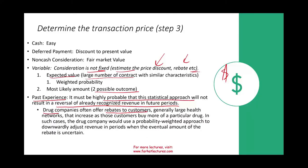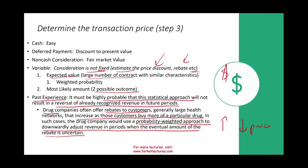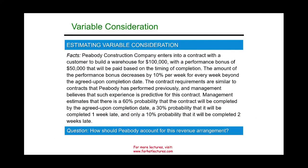Some industries like pharmaceuticals offer rebates to large health networks. The rebate increases as customers buy more of a particular drug — the more you buy, the lower the price in the future. So the drug company must use a probability-weighted approach to adjust revenue downward in periods when the eventual rebate amount is uncertain. They don't want to book too much revenue if they know they'll have to give some money back later.